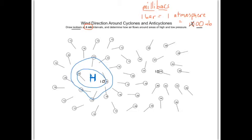Think of these lines like the edges of stairs — as you step down it goes from high to low, but all along the edge of that stair it's the same height. So all these lines are the same pressure. I'm now drawing the thousand-and-twenty millibar isobar. Millibar is the unit and isobar is the actual line — 'iso' meaning same, the same pressure.